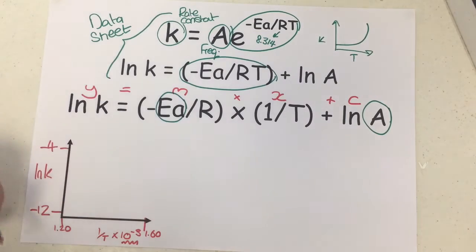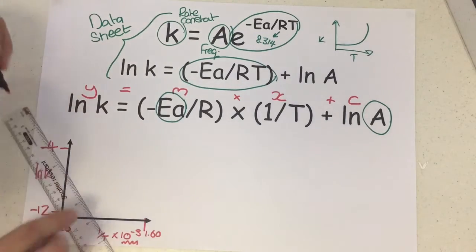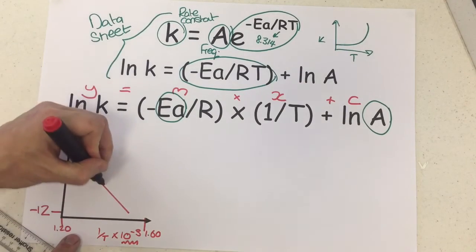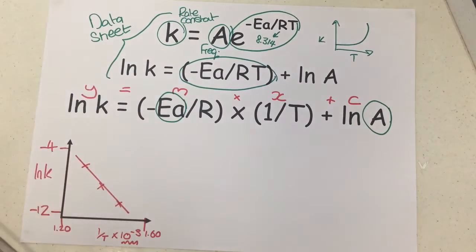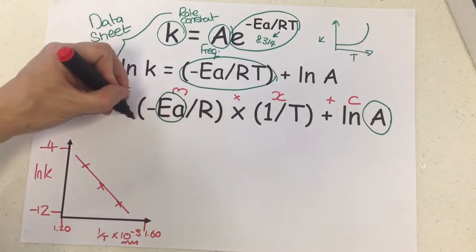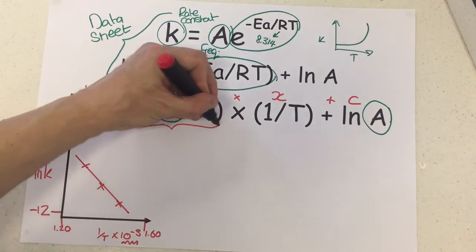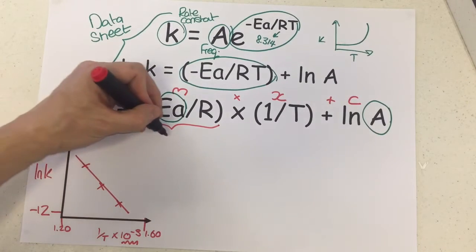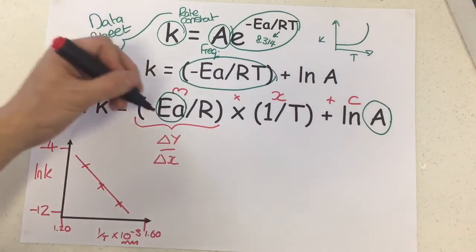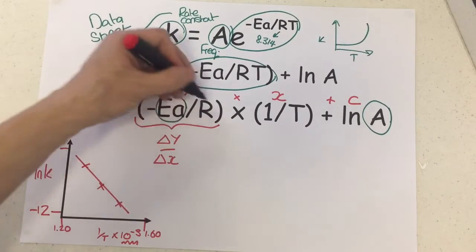Now if you plot your points on here, you are going to actually get a straight line. We've got our straight line graph like this. Now our gradient of this is going to be our m, and so if you calculate the gradient by doing dy/dx—our change in y divided by our change in x—you're going to get this as your gradient value.